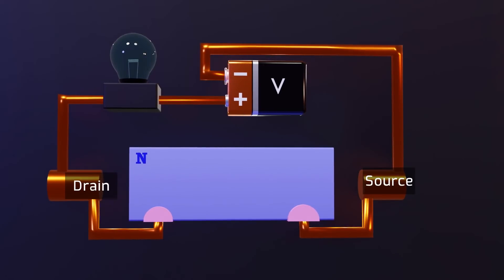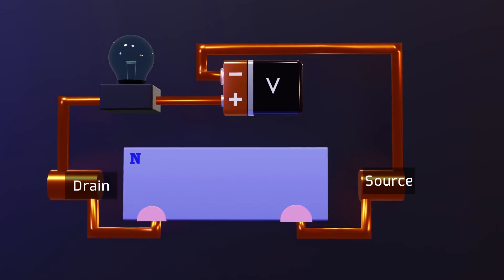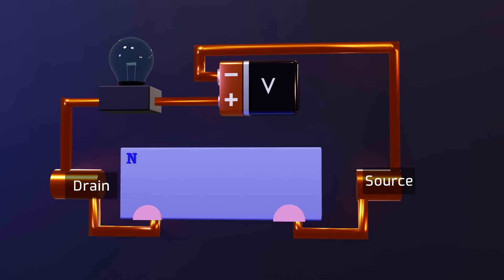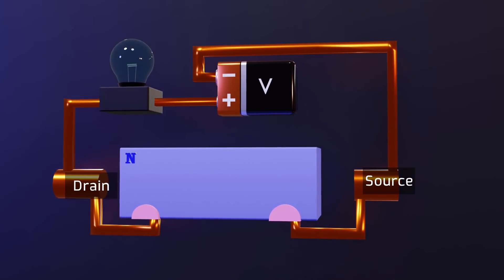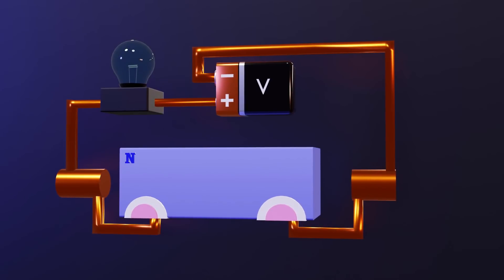So we would have something similar to a PNP transistor, but instead of the middle type N semiconductor being extremely thin, now the proportions will be reversed. Again, since we will have two PNs junction, the corresponding depletion zones will form, avoiding the passage of the current in its natural state.